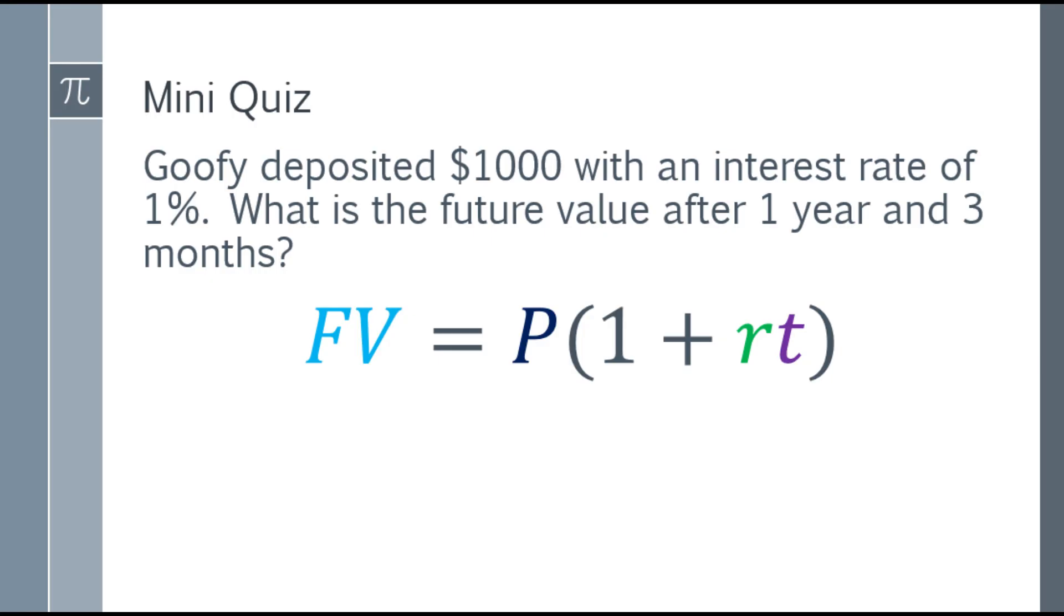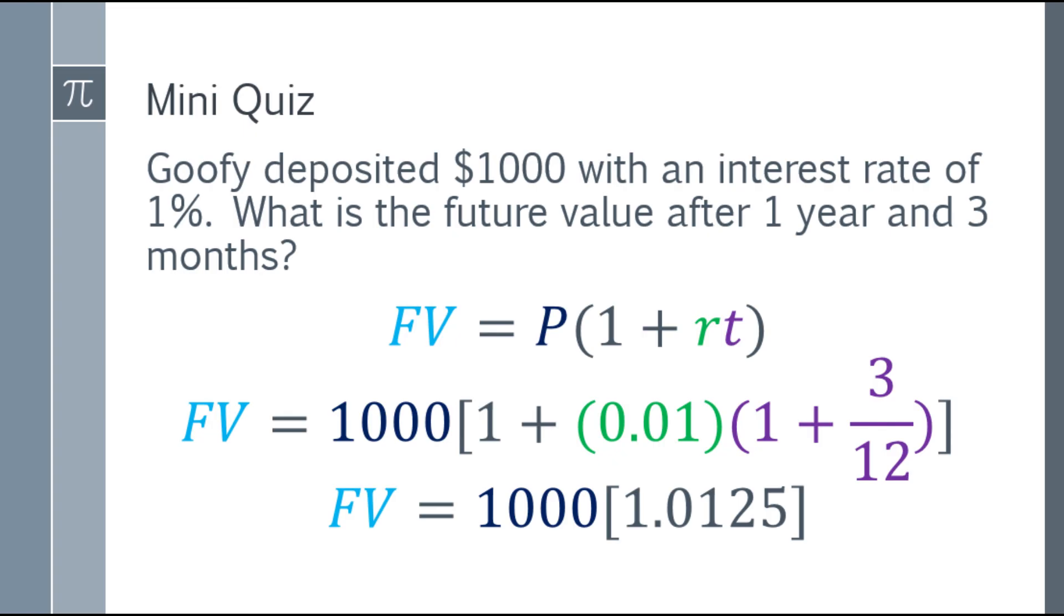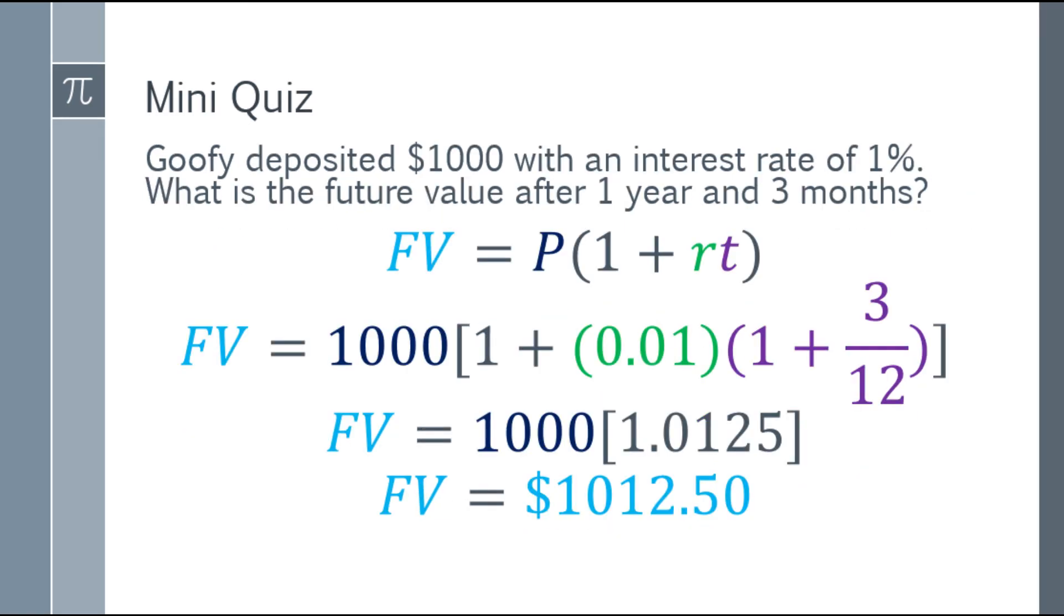Next one, substitute the given. So future value is equal to 1,000 times the quantity 1 plus, then multiply these two: 0.01 because it's 1%. Now, 1 year and 3 months is 1 plus 3 over 12. The given is 3 months. There are 12 months in a year. So as a fraction of it, 3 over 12. In your calculator, 3 over 12 is just 0.25. Now, add 1, that's 1.25. Now, next one, you multiply by 0.01, and the answer, add 1. And you will have an answer of 1,012.50, or 1,012.5.